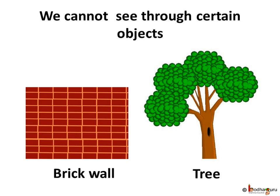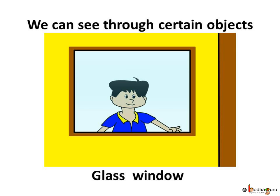Let us analyze what you do when you play hide and seek with your friends. All the kids love the game of hide and seek. What all places would you like to hide so that you are not seen by others? You might hide behind a wall or the trunk of a huge tree. Would you like to hide behind a glass window? Not at all, because your friends can see through and spot you. That means you cannot see through all the materials, like in the case of the wall or the tree trunk.